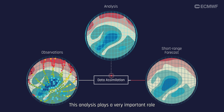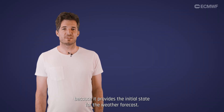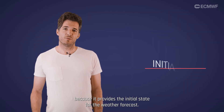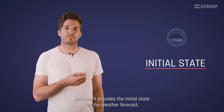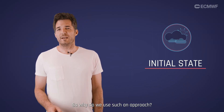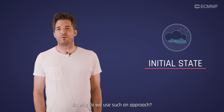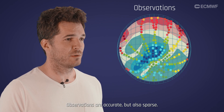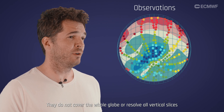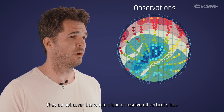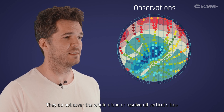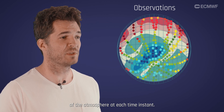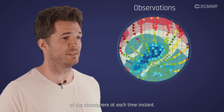This analysis plays a very important role in numerical weather prediction because it provides the initial state for the weather forecast. So why do we use such an approach? Observations are accurate but also sparse. They do not cover the whole globe or resolve all vertical slices of the atmosphere at each time instant.